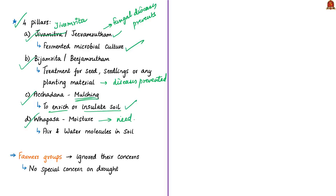The fourth pillar is Vapasa moisture. Plant roots need water, countering the over-reliance on irrigation in green revolution farming. Vapasa is the condition where both air molecules and water molecules are present in the soil. If all this can be achieved, there will be no need to use chemical fertilizers — that is why the Finance Minister is proposing to adopt such a farming method.